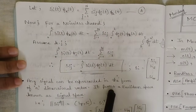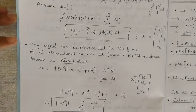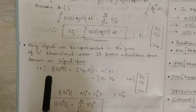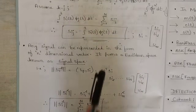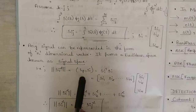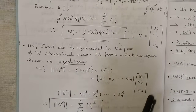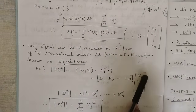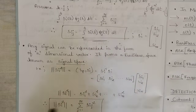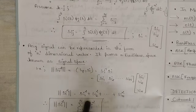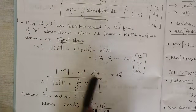Any signal can be represented in the form of an N-dimensional space vector; it forms a Euclidean space known as the signal space. The signal space norm is represented with double lines as ‖SI‖², given as SI transpose multiplied by SI. This equals SI₁² + SI₂² + ... + SIₙ². Therefore, ‖SI‖² = summation from J=1 to N of SI_J², where J ranges from 1 to N.